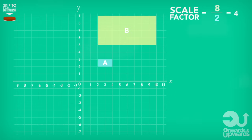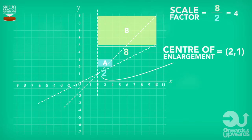Next, the corresponding corners are joined. They cross when we draw them all at the coordinate where we have two on the x-axis and one on our y-axis. So, our final answer is that we have a scale factor of four and the centre of enlargement is the coordinate point two, one.